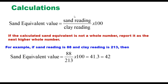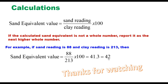The sand equivalent value is calculated as: (sand reading ÷ clay reading) × 100. If the result is not a whole number, report it as the next higher whole number. For example, if the sand reading is 88 and the clay reading is 213, then SEV = (88 ÷ 213) × 100 = 41.3, reported as 42. Thank you very much for watching this video; if you liked it, please write in the comment box.